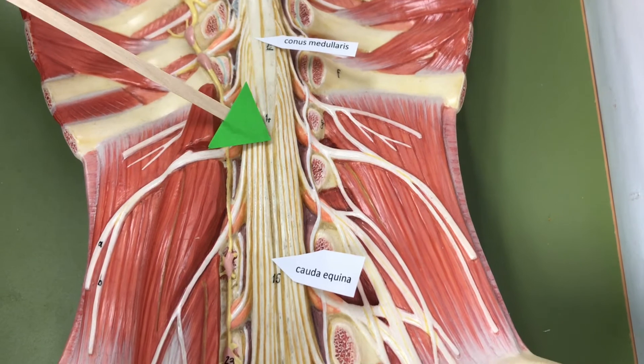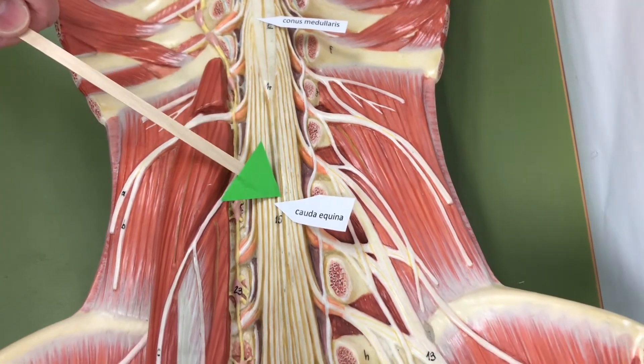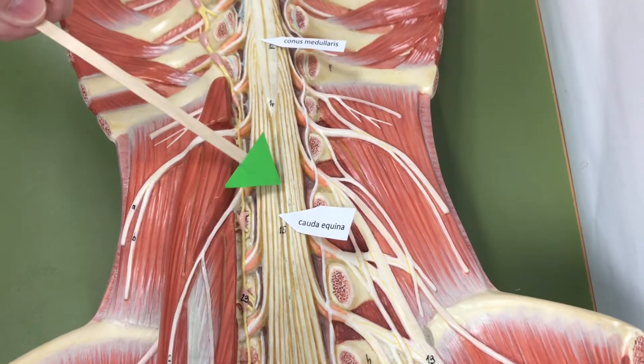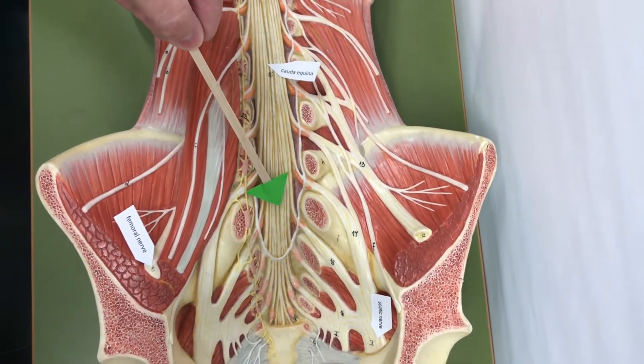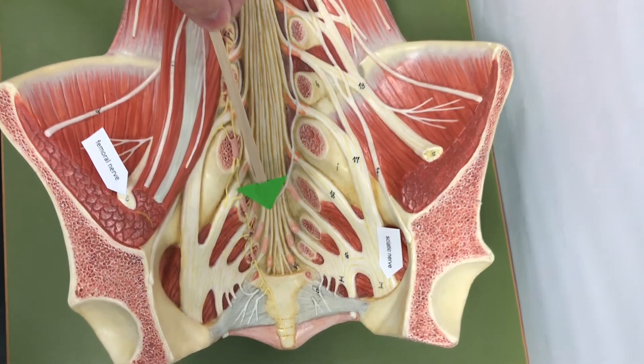Then we have nerve parts called the cauda equina or horse's tail. You can see how they fan out and continue until they terminate.